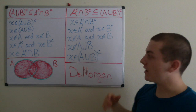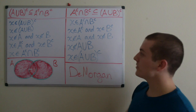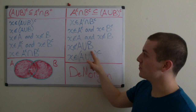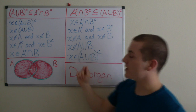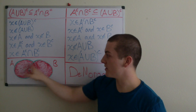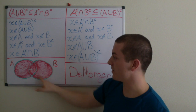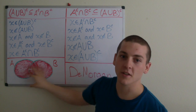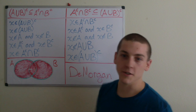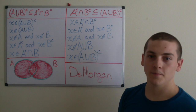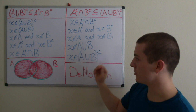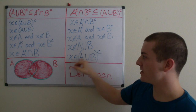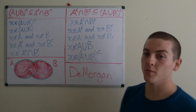With the same logic, x is not an element of A union B, because x is not an element of this region and x is not an element of this region. So surely it's not an element of the two regions combined. And by definition of complements, x is an element of A union B complement.